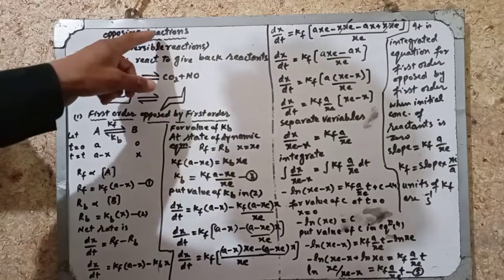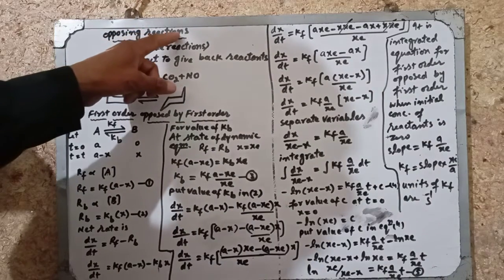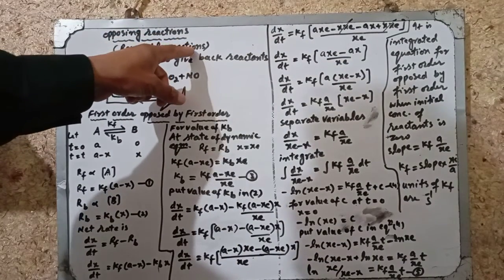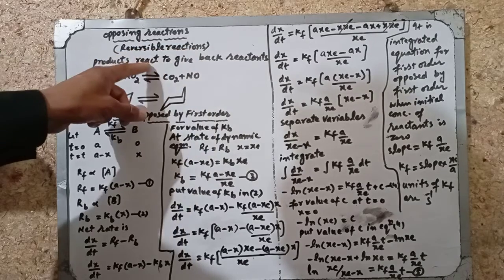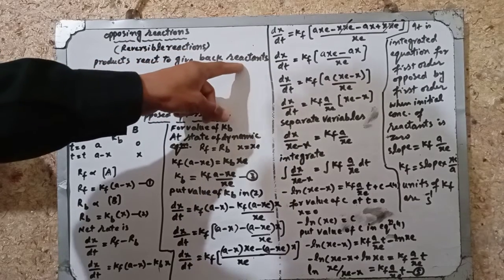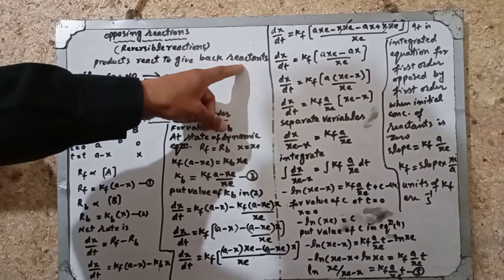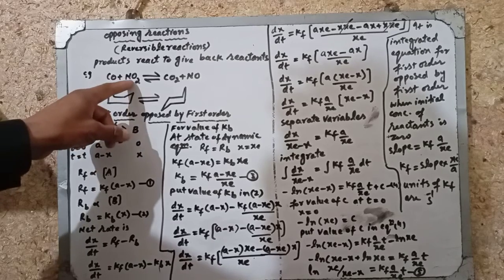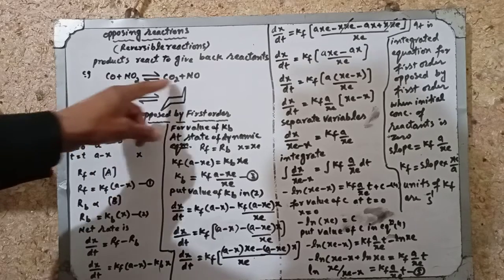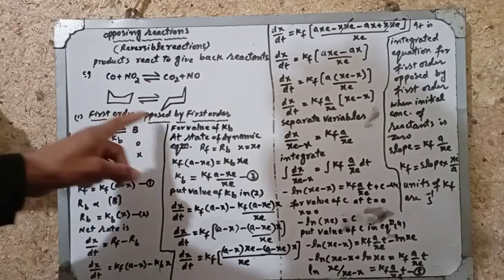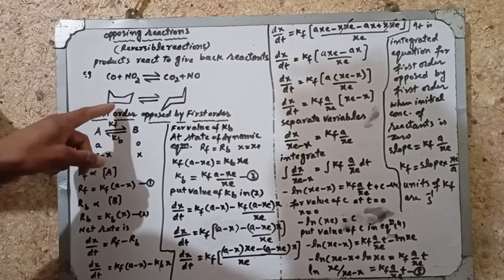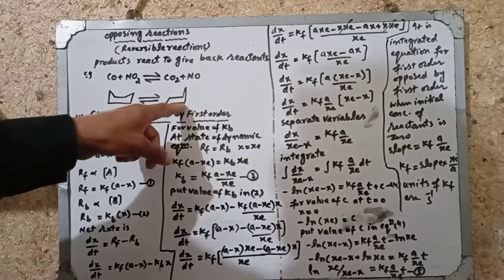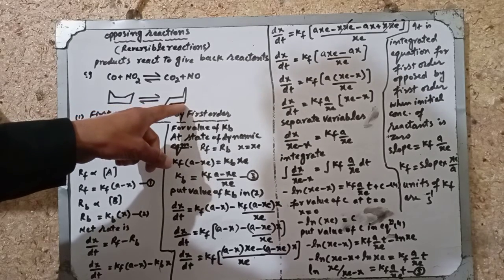Bismillah ar-Rahman ar-Rahim. Today we are studying opposing reactions, which are also called reversible reactions. Products react to give back the reactants, and these take place in both directions. For example, CO plus NO2 reversibly gives CO2 plus NO. Similarly, the boat conformation of cyclohexane is reversibly converted into the chair conformation of cyclohexane.